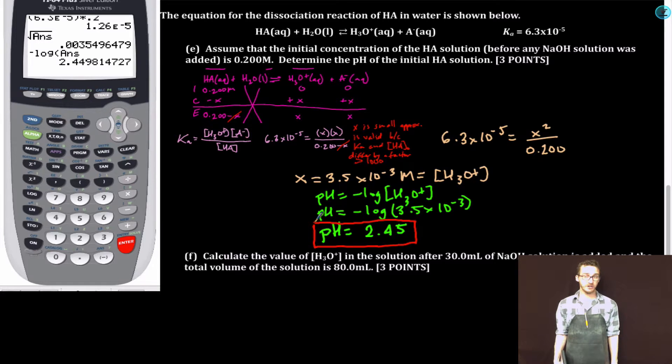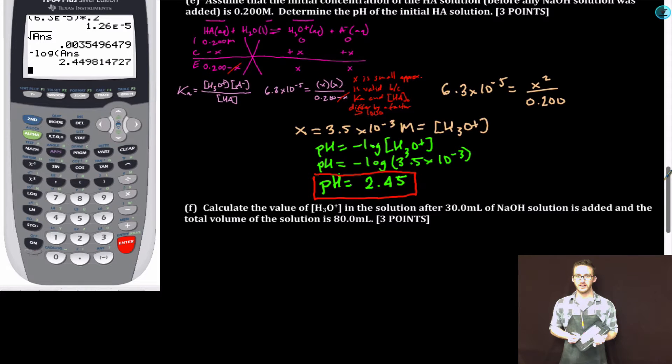Part E was a doozy. Three points. A point for the correct substitution into the Ka expression. This is why it's so important to write your Ka expression in terms of the species in your equation first. Second point came from the correct determination of the hydronium ion concentration. And the third point came for the correct pH. So, important as always, show your work.